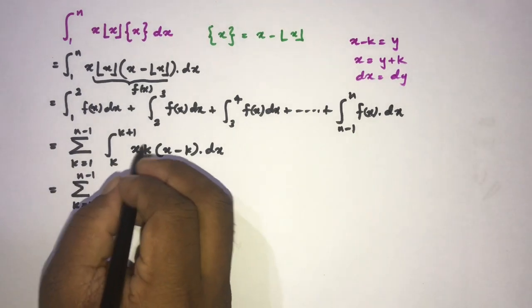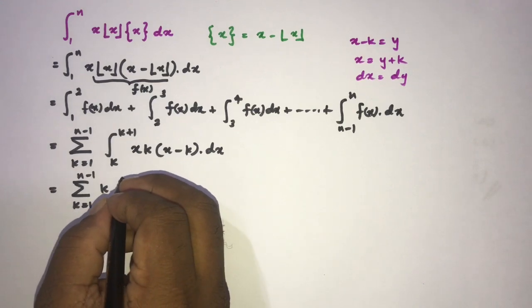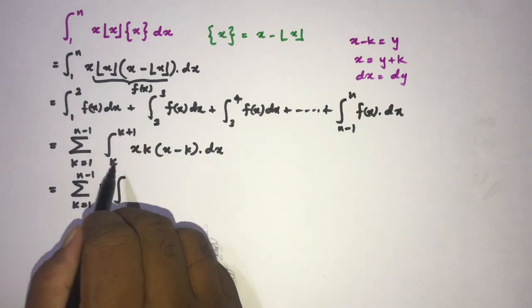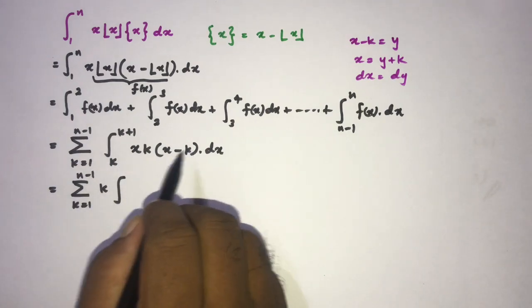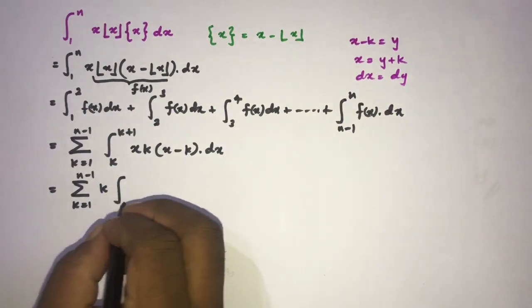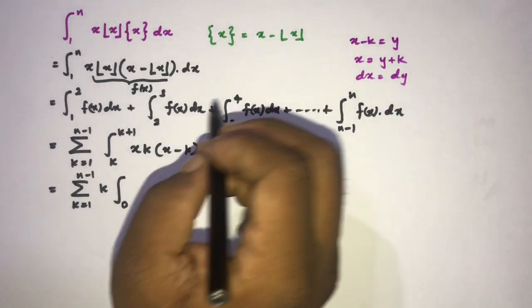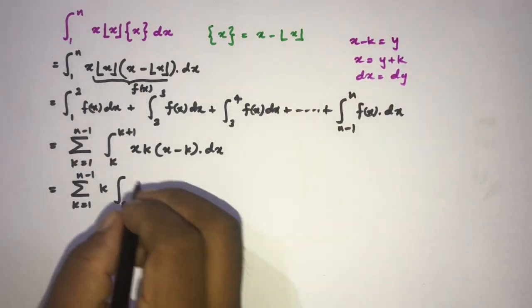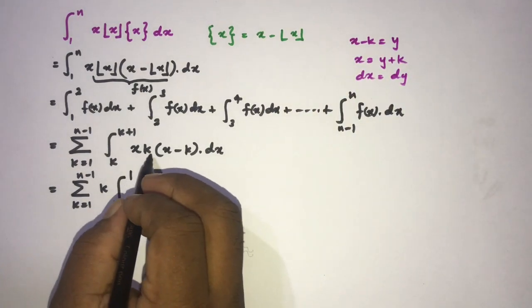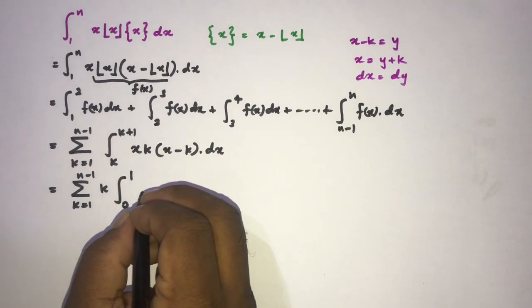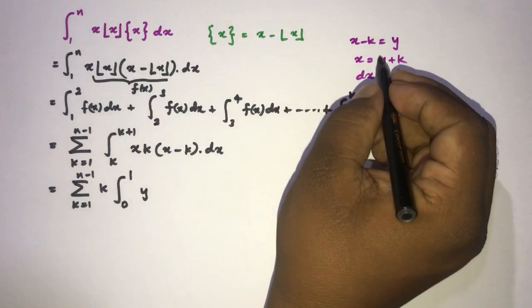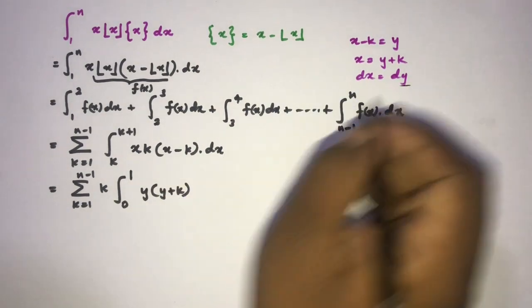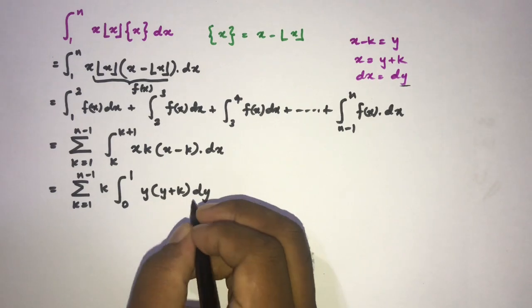Since k is a constant, we can write it outside the integral sign. We change the limits: when x approaches k, y approaches 0; when x approaches k+1, y approaches 1. Substituting, x minus k becomes y and x becomes y plus k, giving us k times the integral from 0 to 1 of (y plus k) times y dy.